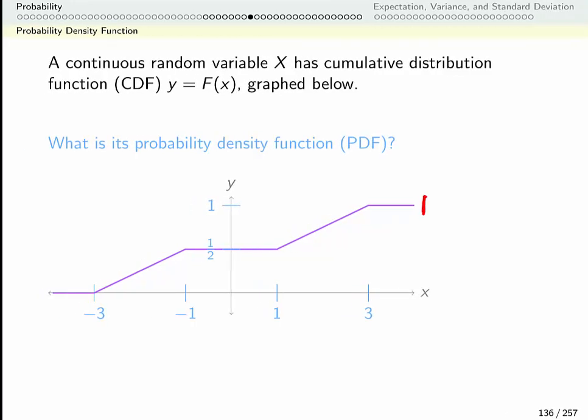So this function we see here that's my cumulative distribution function. My probability density function is its derivative. So it's easy to see where it's 0. My function is flat here, flat here, and flat here.